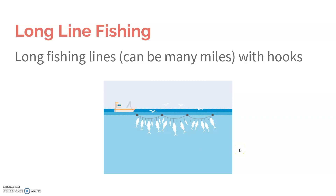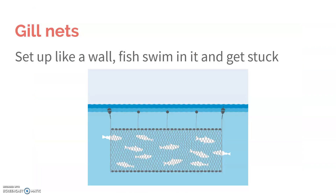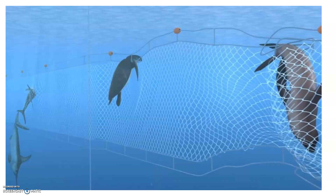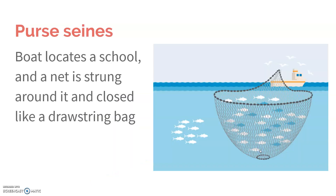Long line fishing is exactly what it sounds like — long fishing lines that can be many miles long with lots of baited hooks. Gill nets act like a wall: fish swim into them and, because the holes are so small, they get stuck. Drift nets are a type of gill net that drifts with the current. These can be very, very long, and as I said, they catch not just the target fish but anything that swims through this wall.